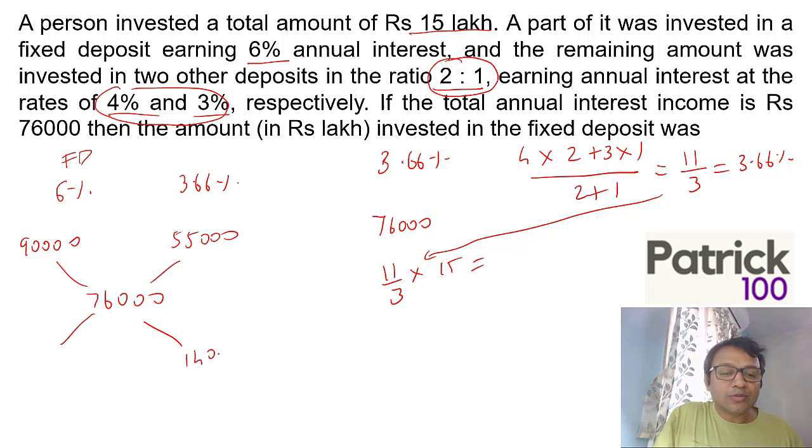These two are mixing to get 76,000 as the average for allegation. This becomes 14,000, this becomes 21,000. So I have to mix in the ratio of 3:2. So 3+2=5, which stands for 15 lakhs. 3 will stand for 3/5 times 15 lakhs = 9 lakhs as the answer.